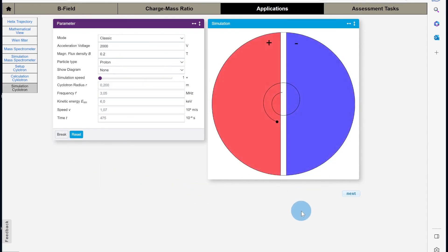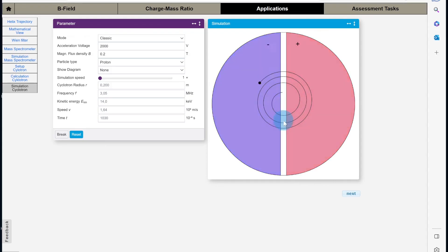That's so the protons will accelerate when they're between the dees in this gap here. Notice how the particles are changing direction when they're within the dees and they're accelerating between the dees.